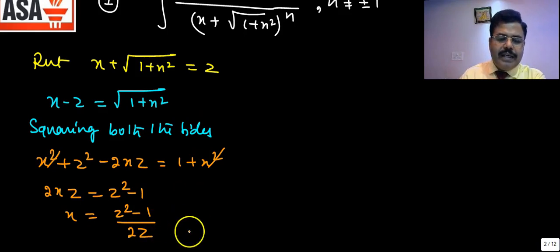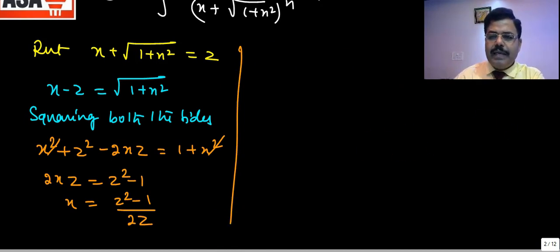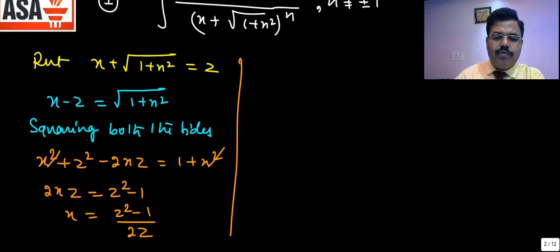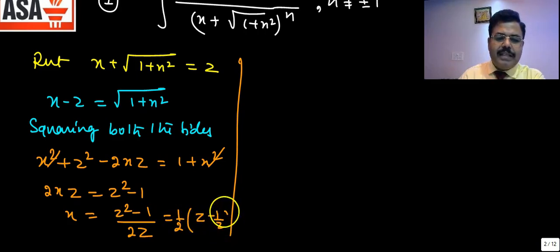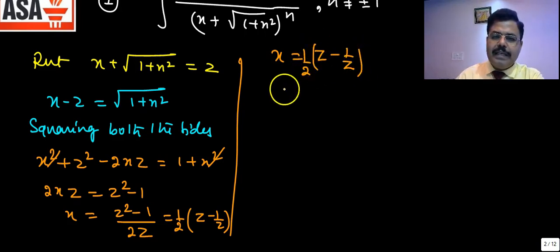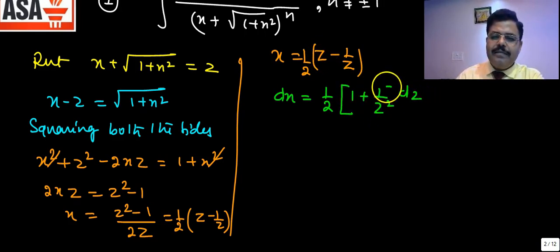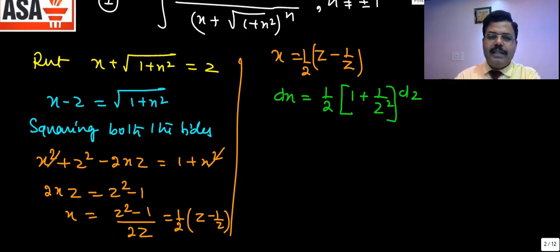Now we calculate dx. Since x = (z² - 1) / 2z, we can also write this as (1/2)(z - 1/z). Differentiating with respect to z, dx = (1/2)(1 + 1/z²) dz.